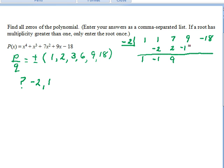Times negative 2 would be negative 18. Add 9 would be negative 9. And in fact, we do have remainder 0 in this first division.